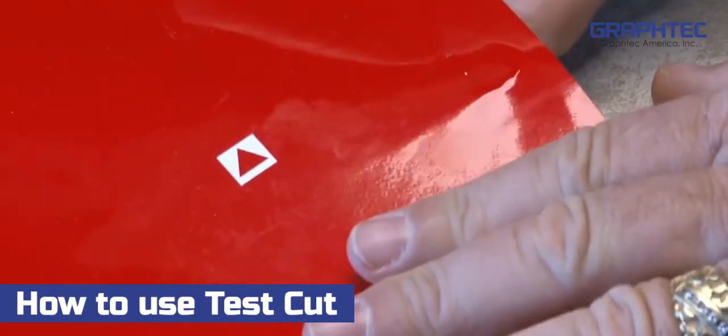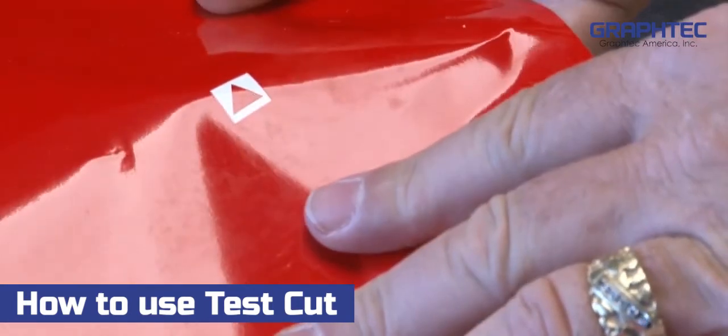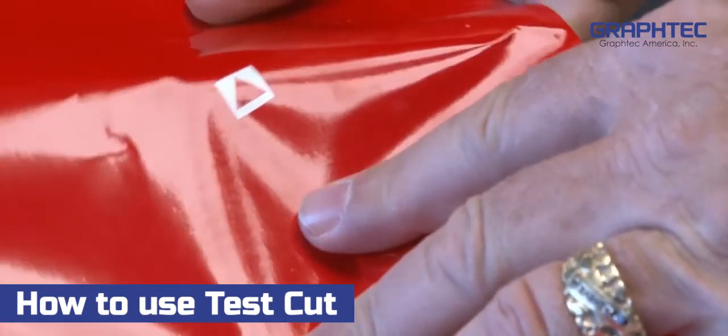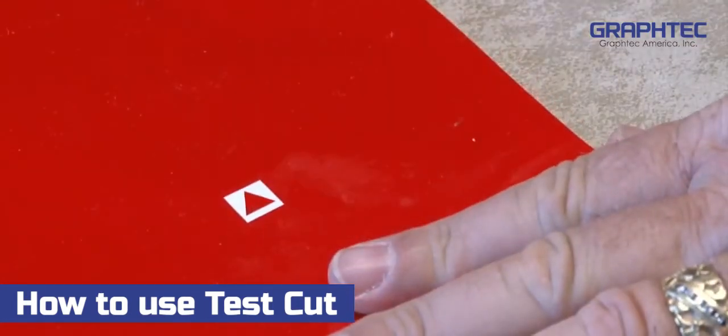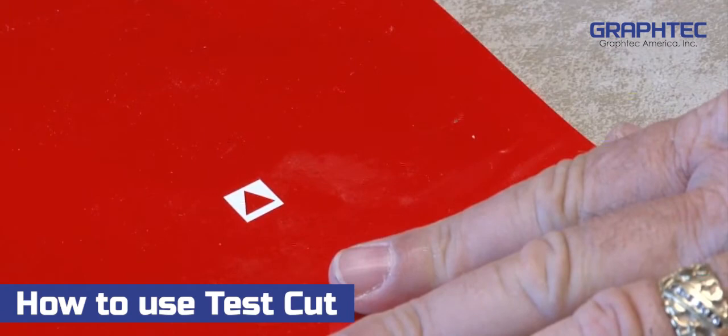Next, take your hand and place it underneath the liner to the location of the test cut. Apply a little pressure, and if it pops through easily, then the force is too high.